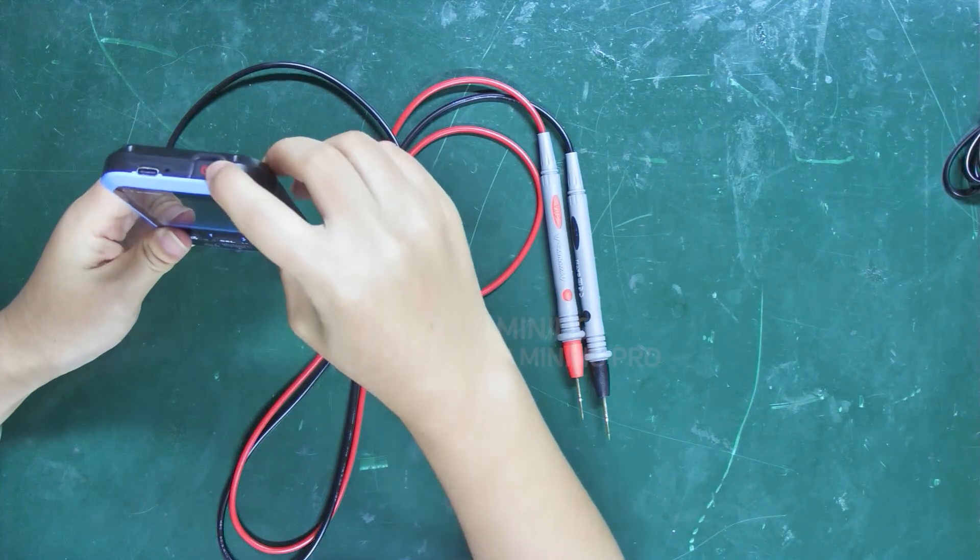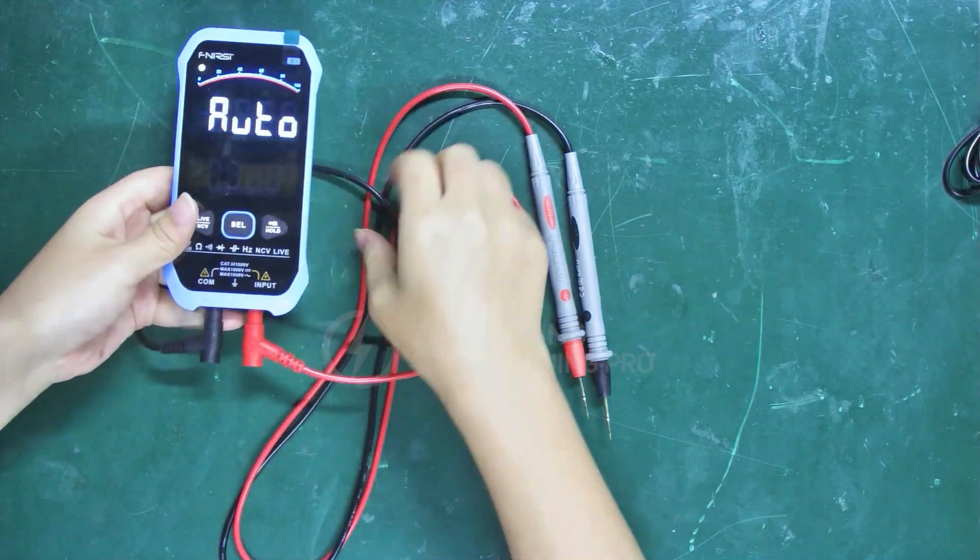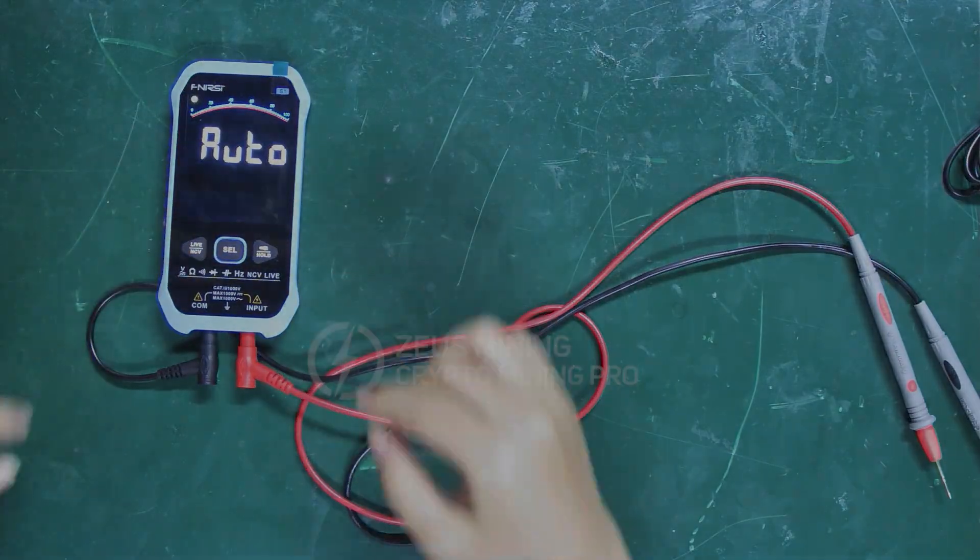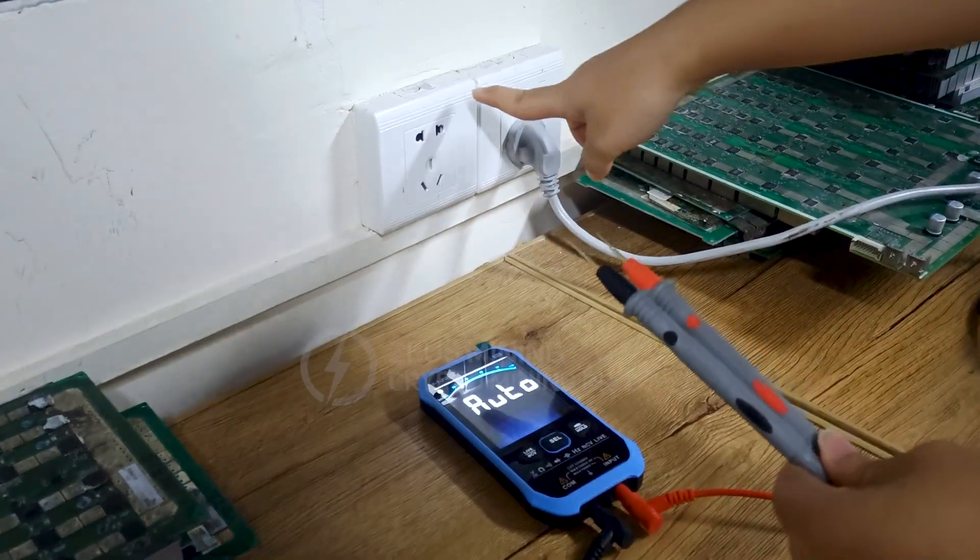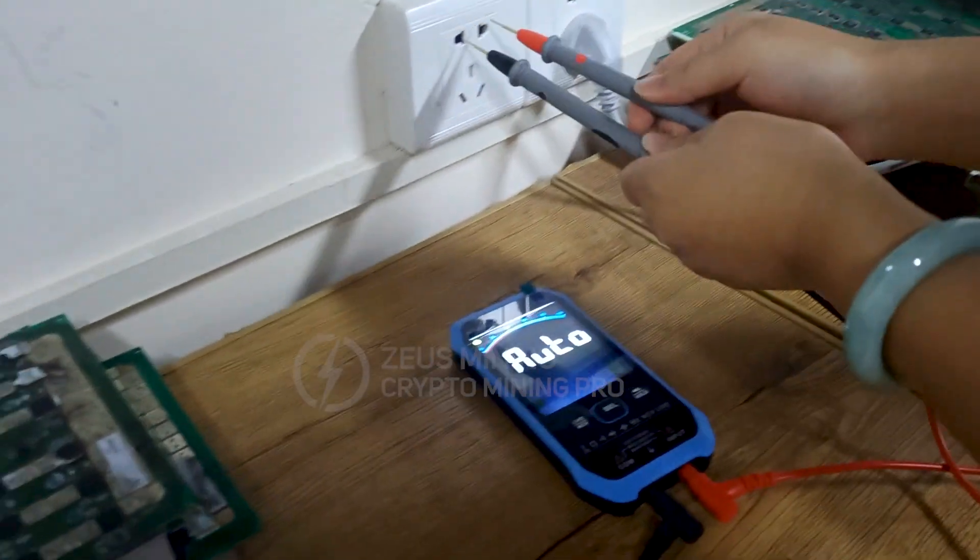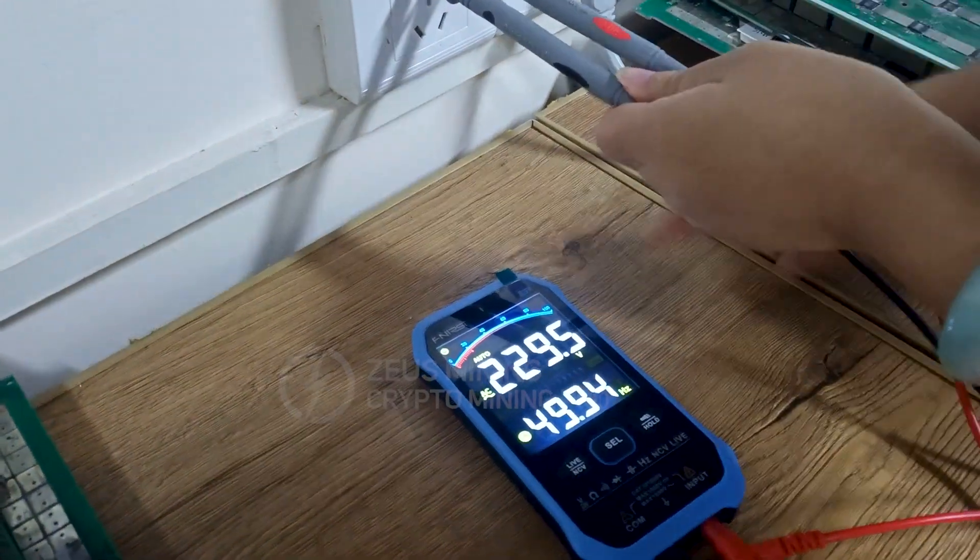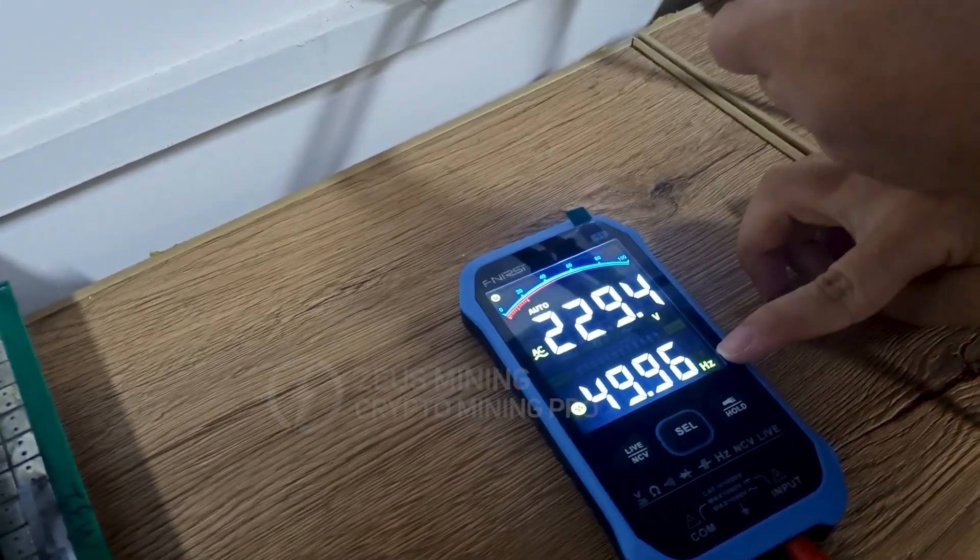Turn it on. Now it's in the automatic gear and can directly measure AC voltage. Insert the red and black test leads into this socket. We can see its voltage and frequency displayed here.